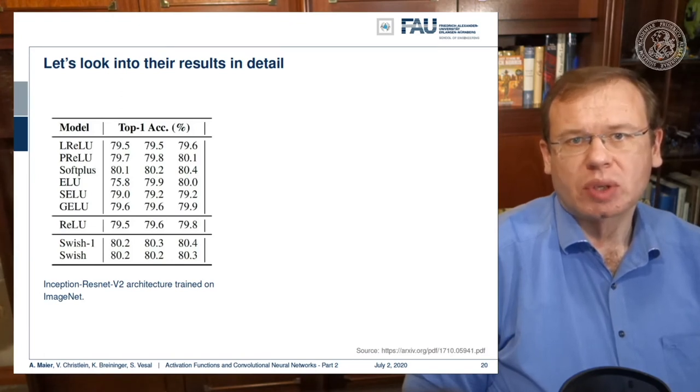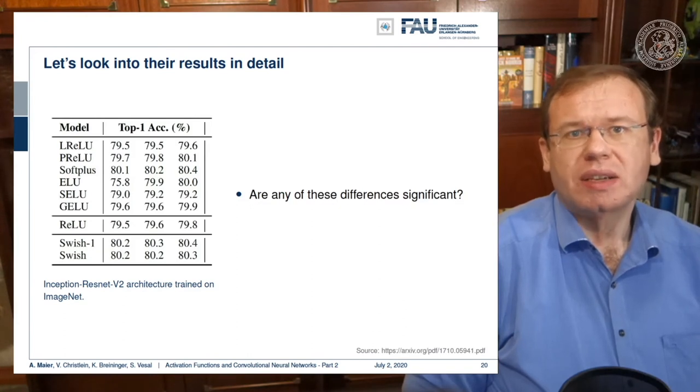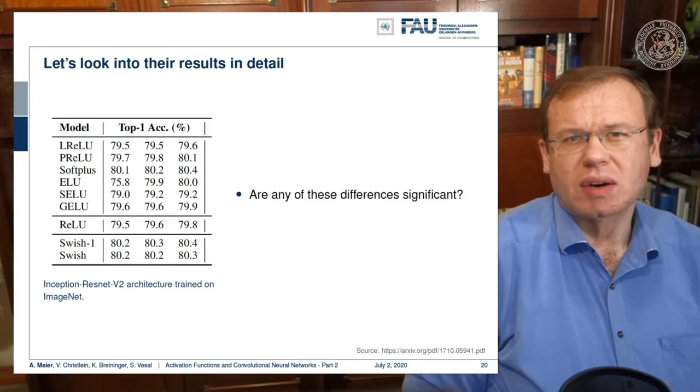Now the question that we want to ask is, are these changes actually significant? So significance means that you compute the probability of the observation to be a result of randomness. And you want to make sure that the result that you're reporting on is not random. In this entire chain of processing, we have frequently random initializations, they have a lot of steps that may have introduced sampling errors, and so on. So you really want to make sure that the result is not random. Therefore, we have significance tests. And if you look very closely, you really ask yourself, are the changes that are reported here significant?